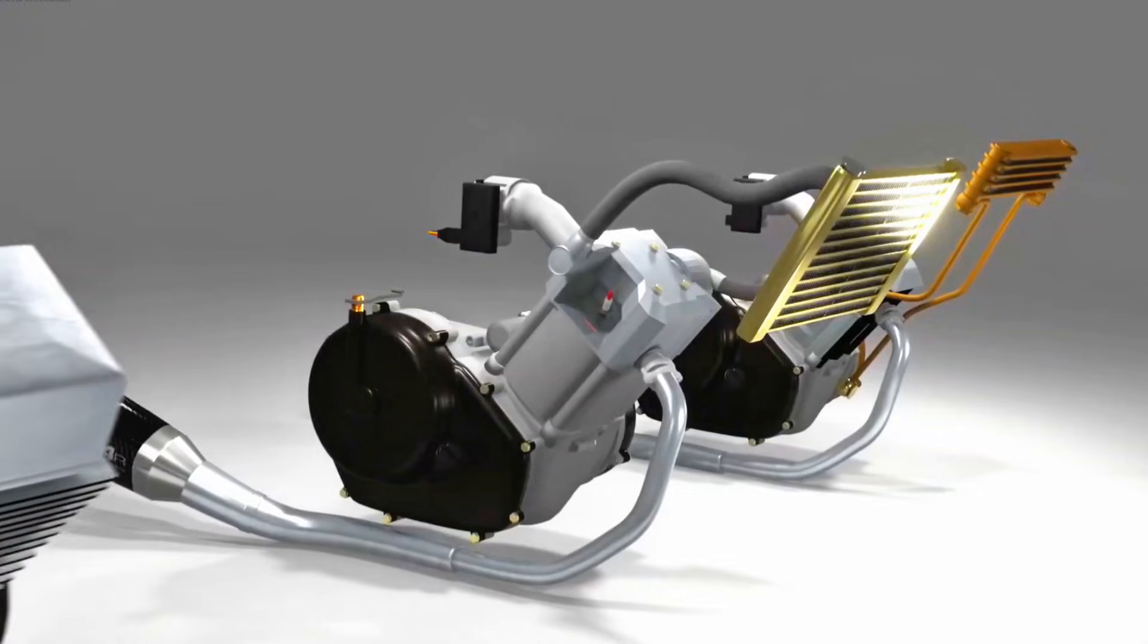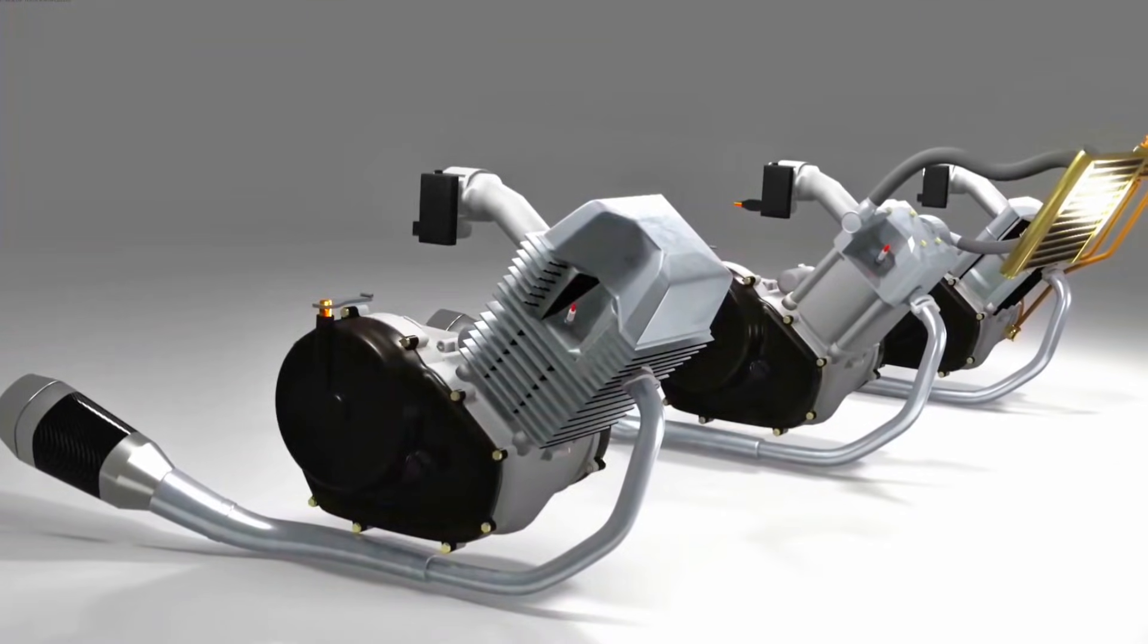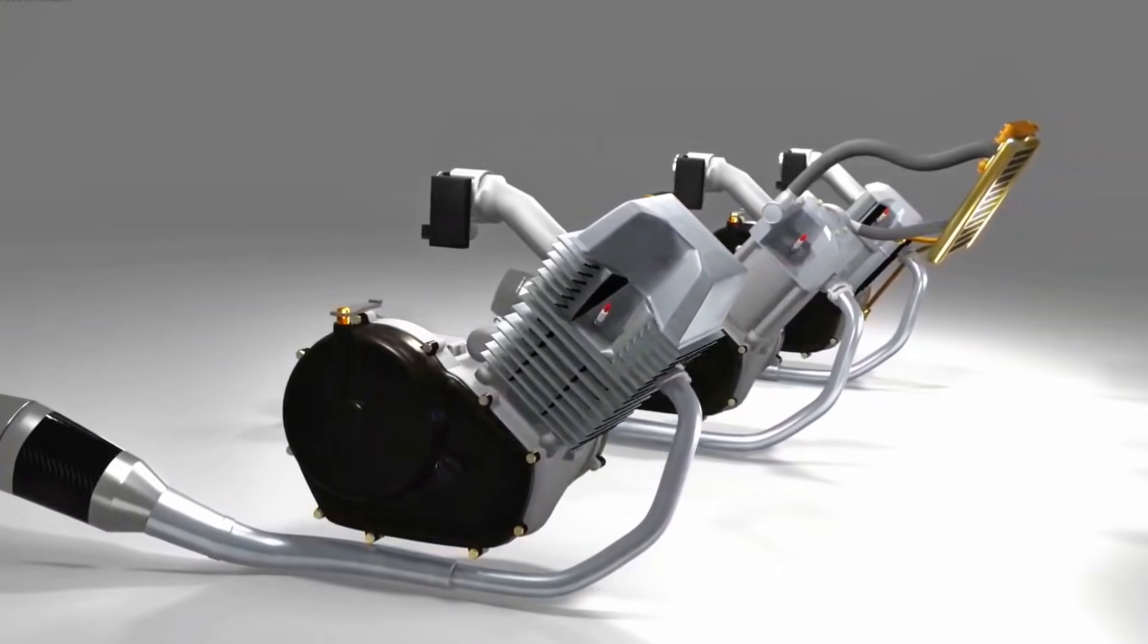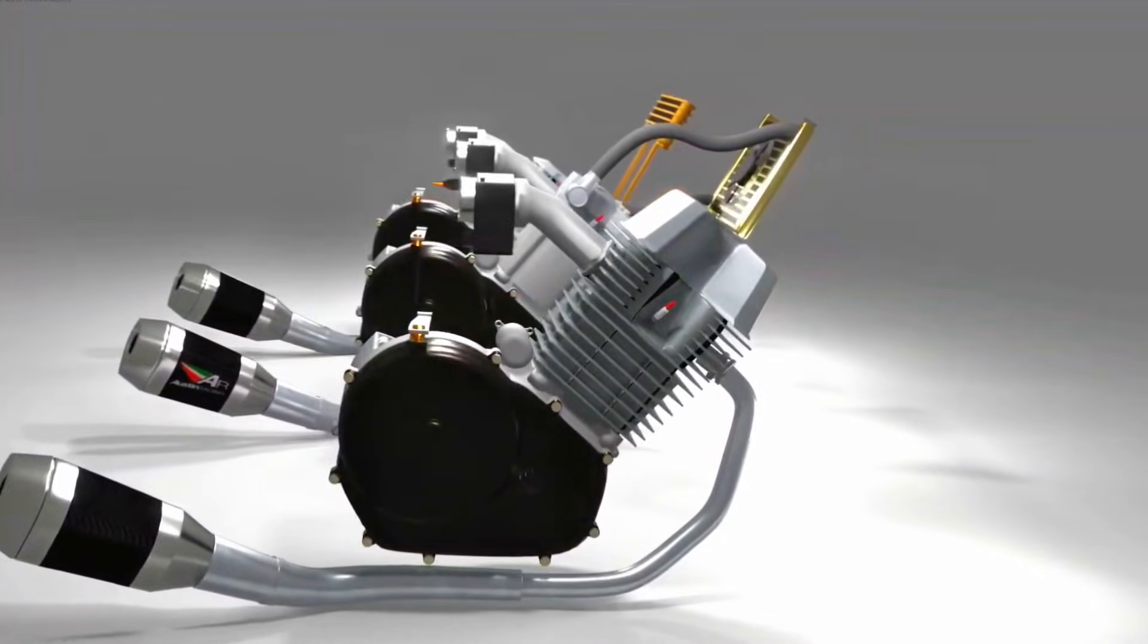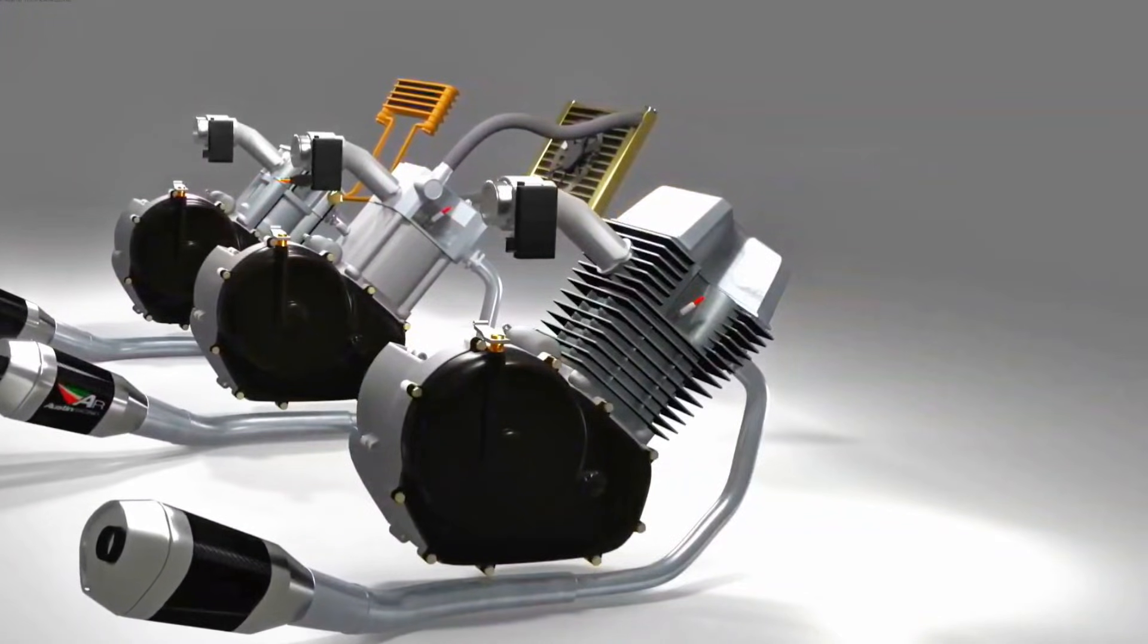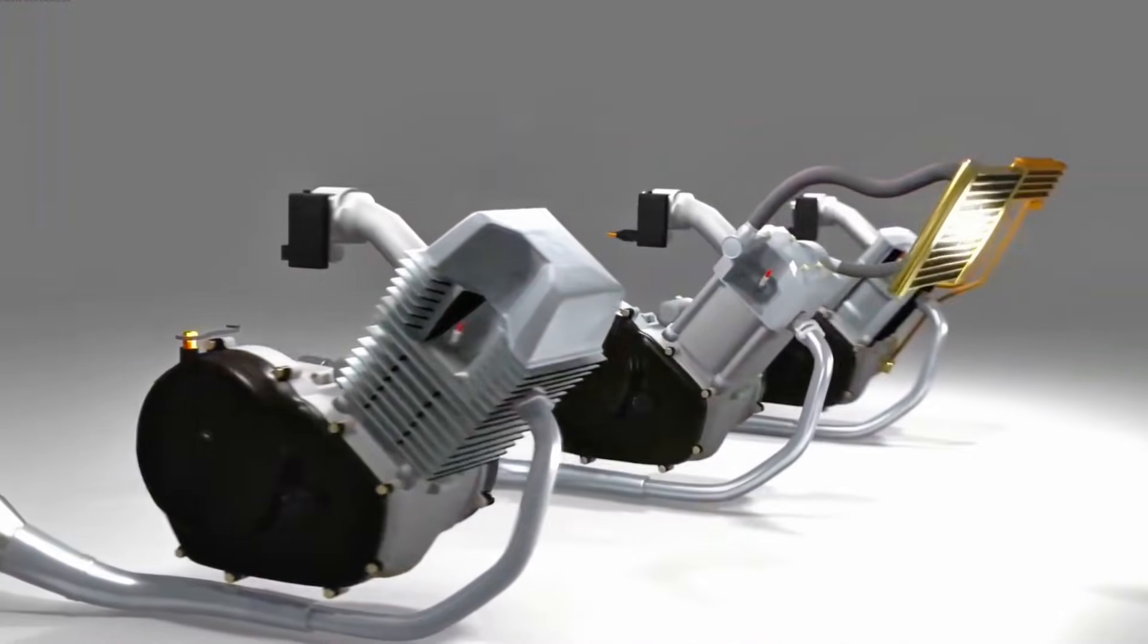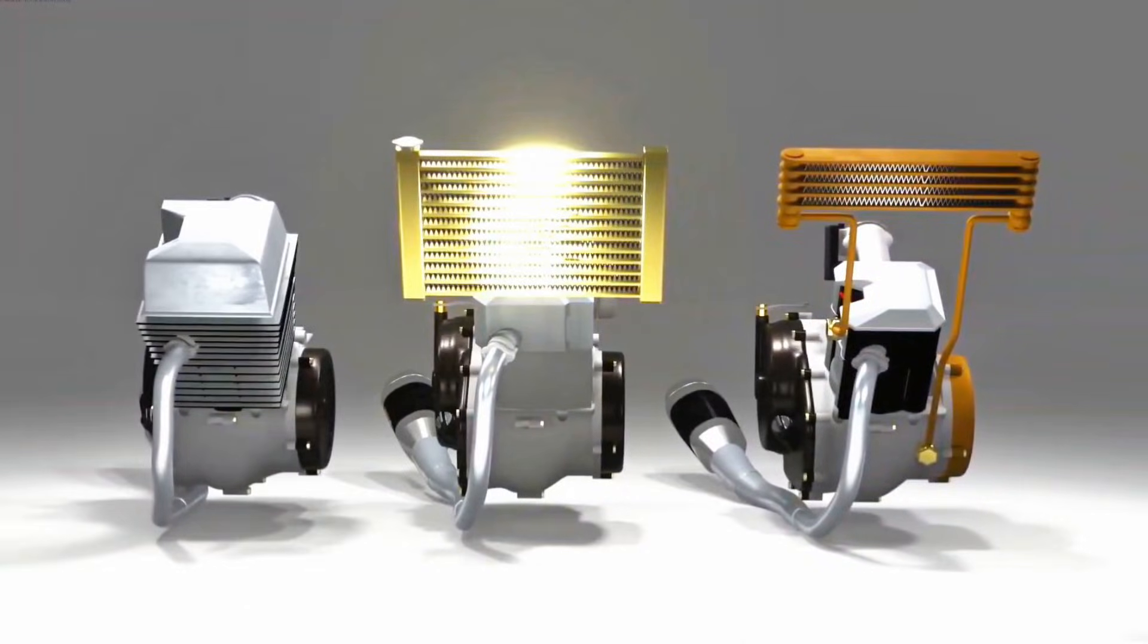For air-cooled systems, they are best suited for smaller engines, typically under 150 cubic centimeters. Modern automatic motorcycles with air cooling are often equipped with an additional fan, ensuring proper cooling even in traffic conditions. The fan activates automatically when the engine is running, preventing overheating even when the motorcycle is stationary.